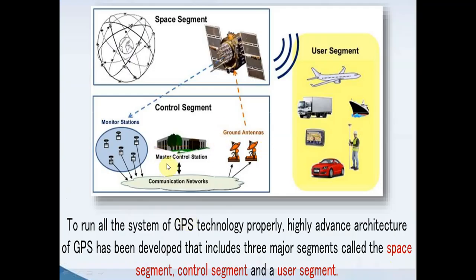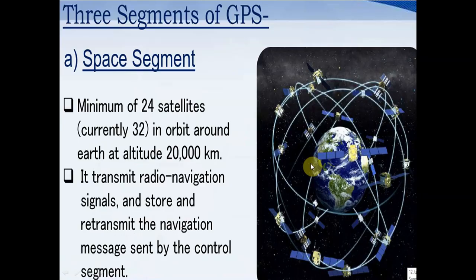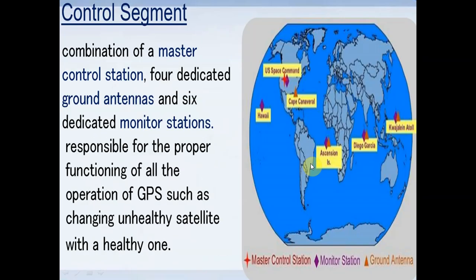The control segment includes the ground antenna, master control station, and their communication network. Combined, these are the control systems and they are directly connected with the satellite, and the user gets the benefit of this device.